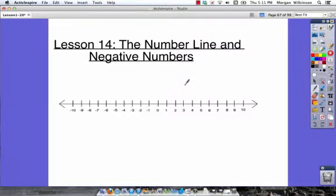Lesson 14 is about the number line and negative numbers. When we look at a number line like we have here, you can see in the middle we have 0. To the right of 0 we've got our positive numbers: 1, 2, 3, 4, 5, all the way through 10. And to the left of 0 we have our negative numbers: negative 1, negative 2, negative 3, negative 4, and so on.